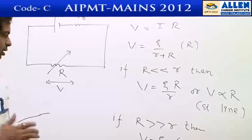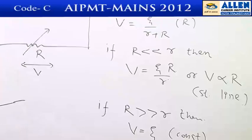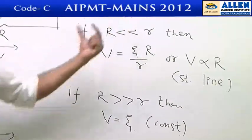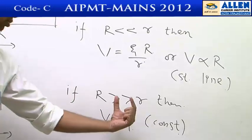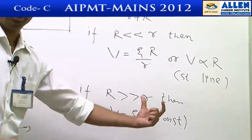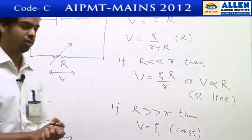But for higher values of R, capital R very greater than internal resistance, we can drop internal resistance and formula will be V equals to EMF of the cell, which is constant now. That means later part of the graph will be a constant.